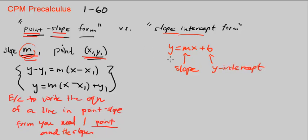So how does it compare? Well, both need the slope, right? Both need M. But this one needs the Y-intercept. What is the Y-intercept?